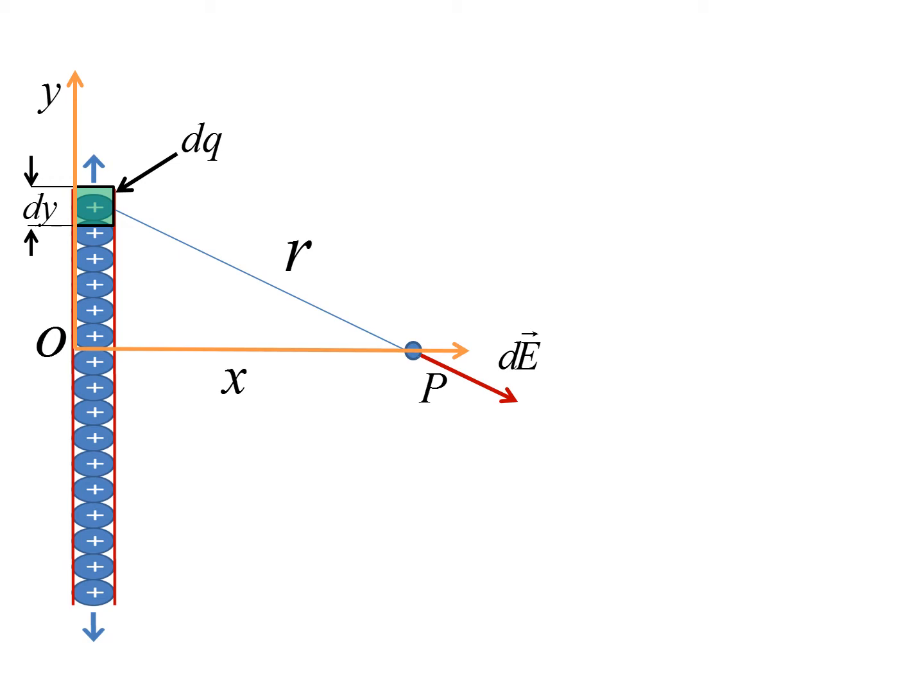So far I've defined three differentials: dE, which is the small amount of field; dQ, which is the charge generating that field; and dY, which is the length of wire containing that charge. If we want the electric field of the entire infinite wire, that would be the integral from negative infinity to positive infinity of our small electric field dE.